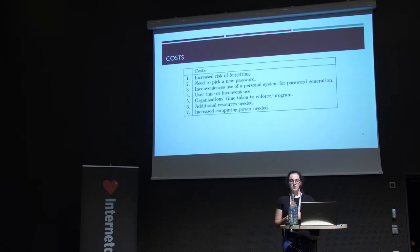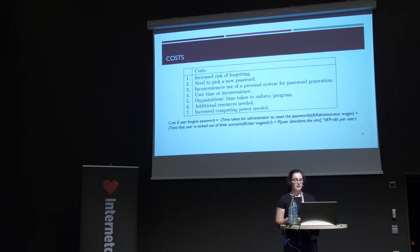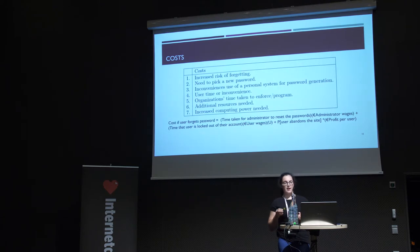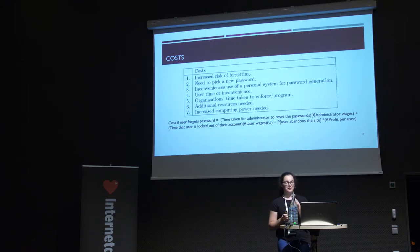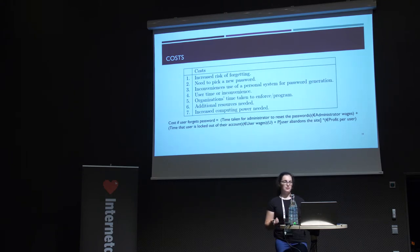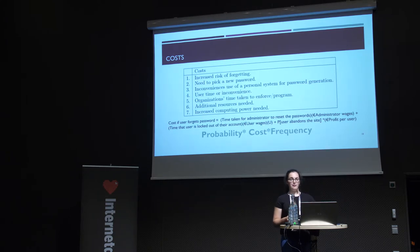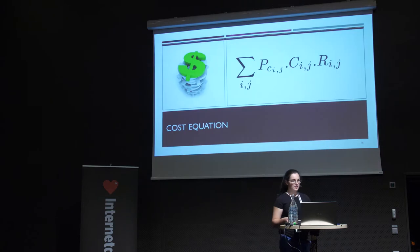The seven cost categories include: increased risk of forgetting, user time or inconvenience, organizational time to enforce the policy, additional resources, and increased computing power. For each cost, we converted it to a monetary value. For example, the cost of a user forgetting a password is: the time for an administrator to reset the password multiplied by their wages, plus the time the user is locked out multiplied by their wages and a user-weighting value between zero and one. We also include the probability that a user abandons the site multiplied by the profit per user. Each cost has a probability of occurring, a frequency, and a repetition factor — for example, expiry costs repeat every 90 days.